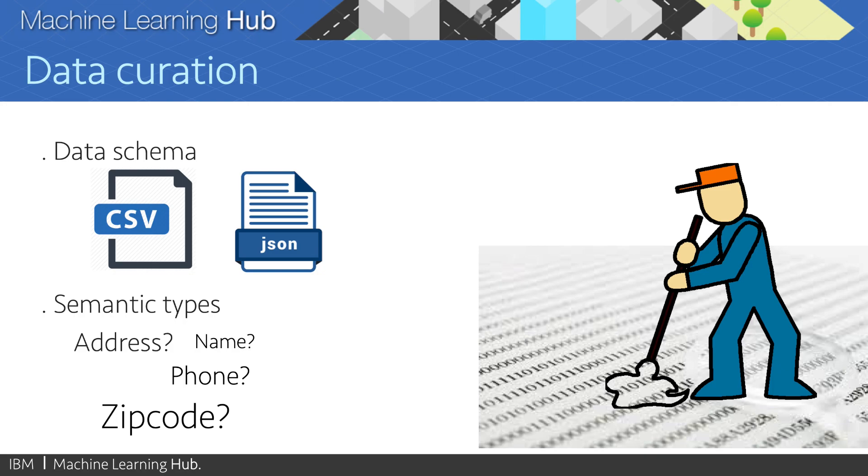And these are useful to find bad data. For example, a negative zip code or a zip code that contains letters.